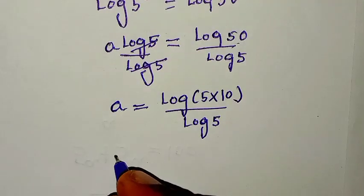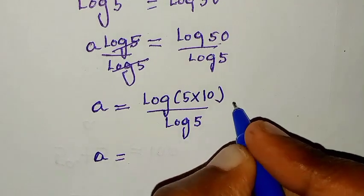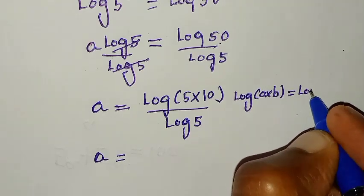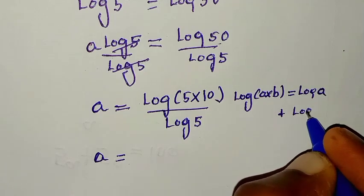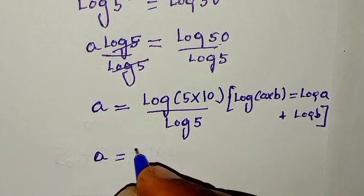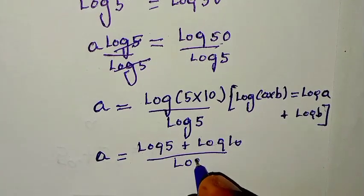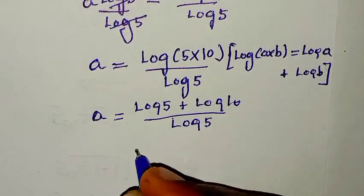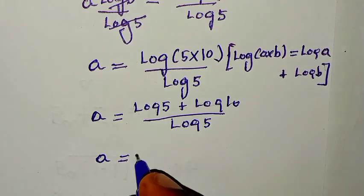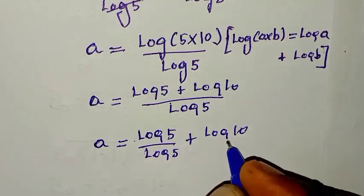Then it will be a is equal to log of 5 times 10, which is in the form of log of a times b, which is equal to log a plus log b. So here log of 5 times 10 is the same as log of 5 plus log of 10, then over log of 5.